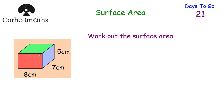Here we've got a cuboid and we want to find the area of all its faces. Now I'm thinking of a dice — it's got six faces. So a cuboid will also have six faces. Thinking of perhaps like a box of cornflakes: you're going to have the front, the back, the top, the bottom, and the left side and the right side.